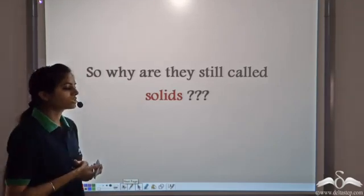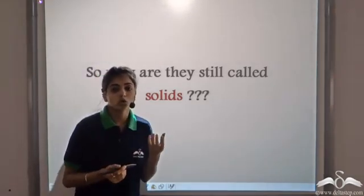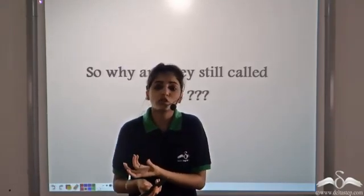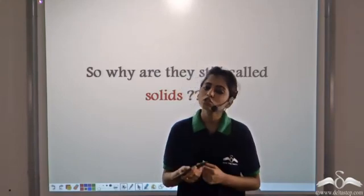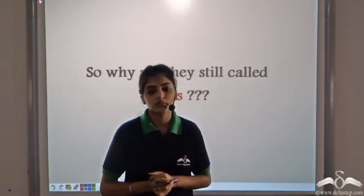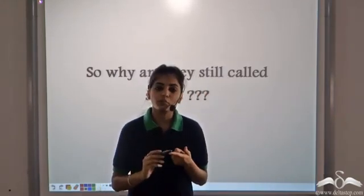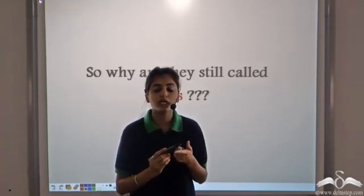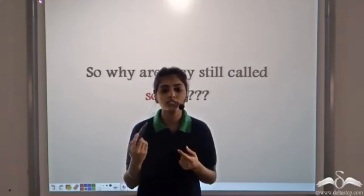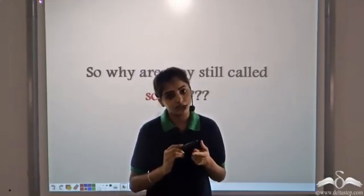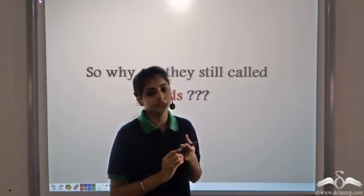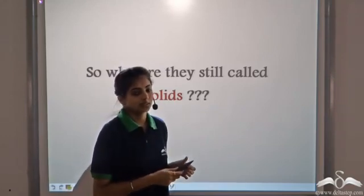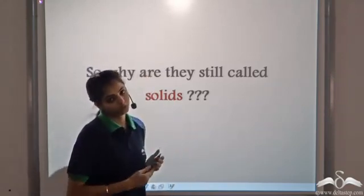We know that solids generally have very strong intermolecular forces of attraction, but in this case we are saying that some exceptional solids have weakened intermolecular forces of attraction. So why do we still call them solids? This is because solids have a definite shape, a definite volume, and a definite mass. Solids like dry ice have a definite shape, a definite volume, and a definite mass, due to which we still call them solids — but these are exceptional cases due to which they directly change into the gaseous state.